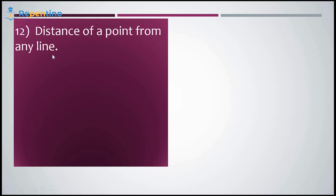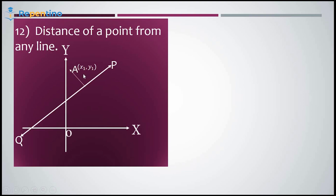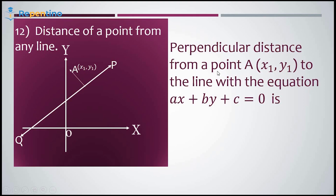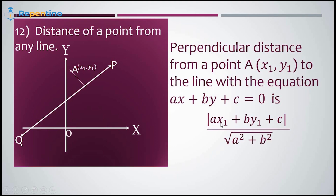Distance of a point from a line — we are talking about perpendicular distance. The perpendicular distance from a point A with coordinates (x1, y1) to the line with equation ax + by + c = 0 is given by: mod of (ax1 + by1 + c) divided by the square root of (a² + b²).